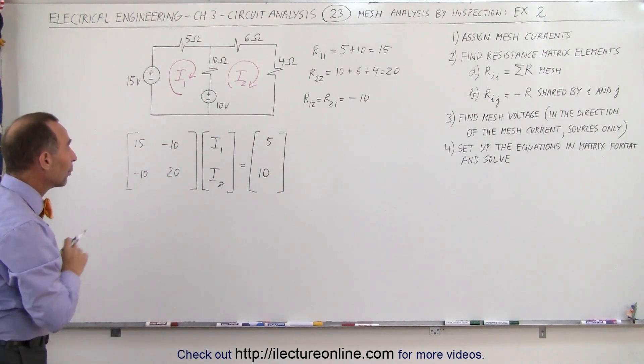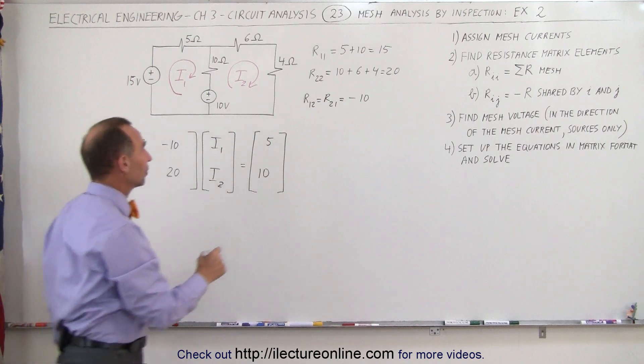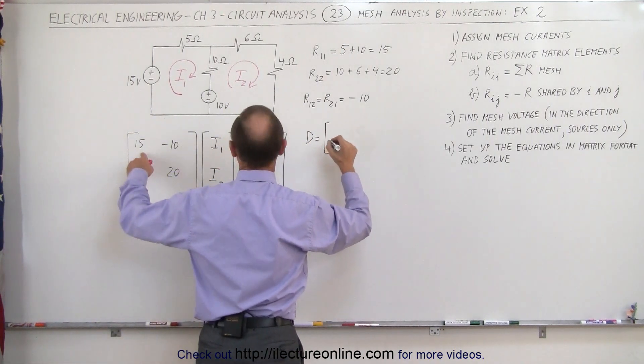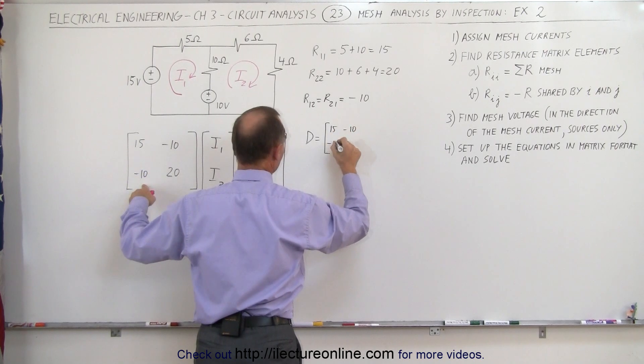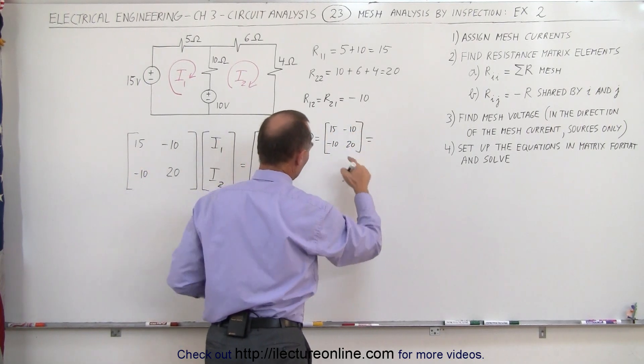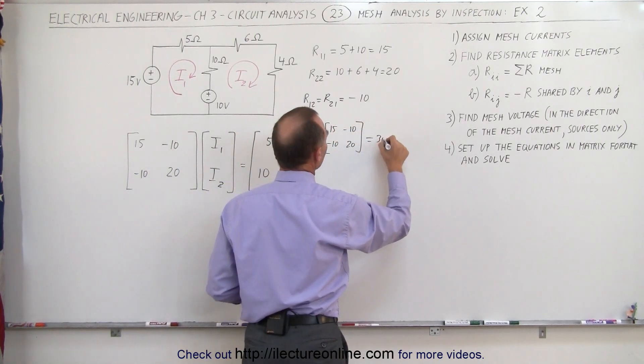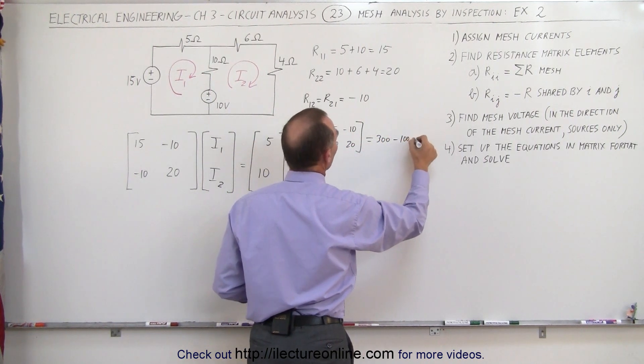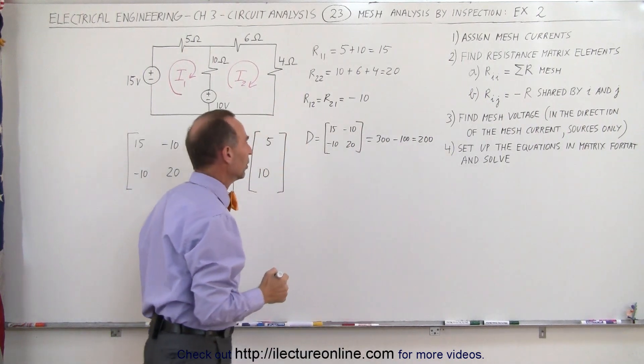Now we're ready to solve for I1 and I2. We do that by first finding the determinant. The determinant is equal to 15 times 20, so this is equal to 300 minus the product of those two, that would be 100, which is 200. So that's the value for the determinant.